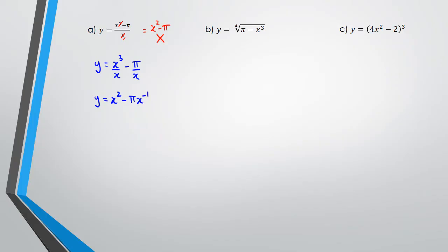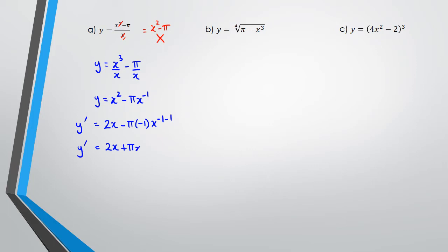Because x is in the denominator, we bring it to the numerator as x to the power of negative one. Now you can differentiate: the differentiation of x squared is 2x, and then you get minus pi multiplied by negative one, x to the power of negative two. So the differentiation gives 2x plus pi over x squared.